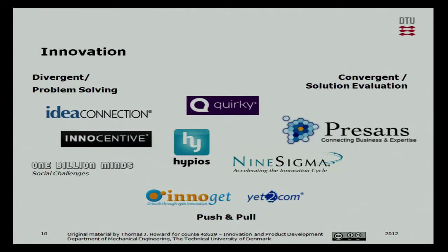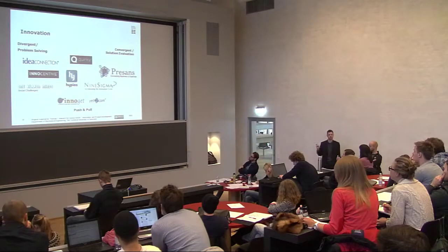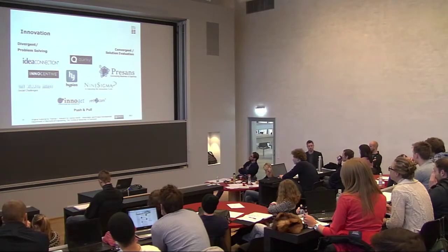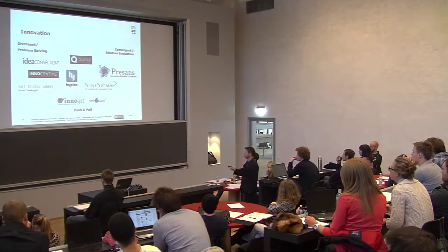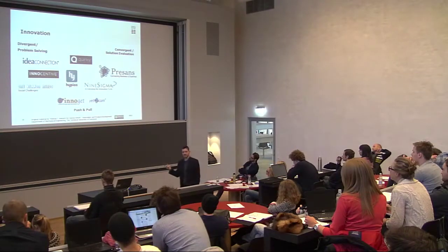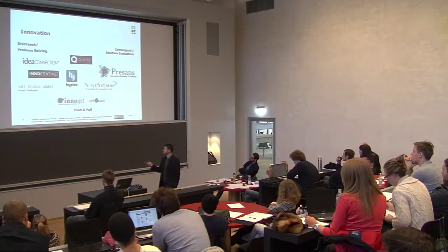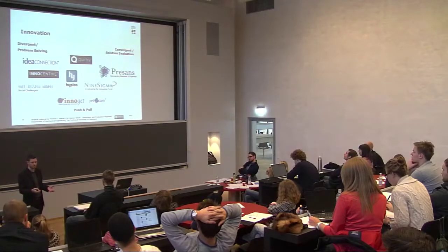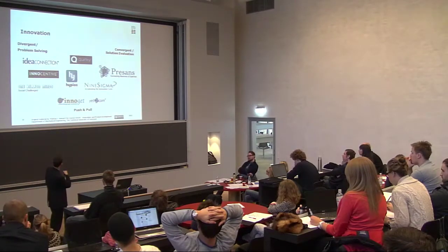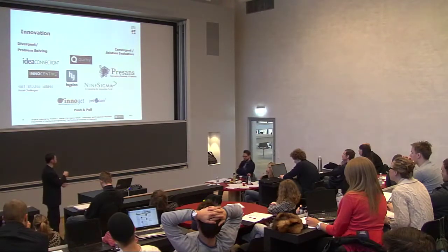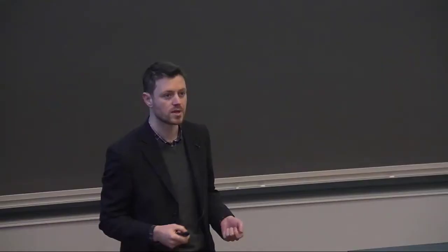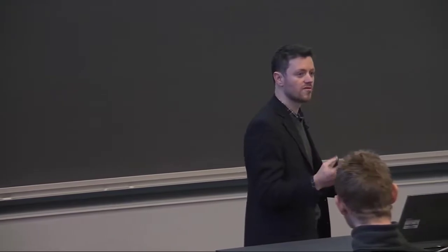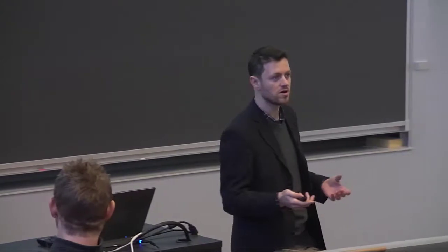Then we have the crowd innovation websites. These are essentially: once you have the funding for the project and your product idea, how are we going to develop it? There are websites based on the problem-solving side: inocentive, One Billion Minds for the social aspect, and Idea Connection. Here you'll basically put out a challenge to the community, and people — groups like yourselves — will look at these challenges and take them up and try to produce a solution. On the convergent solution evaluation side, we have Presans and NineSigma, which will evaluate your idea and show directions for further development.